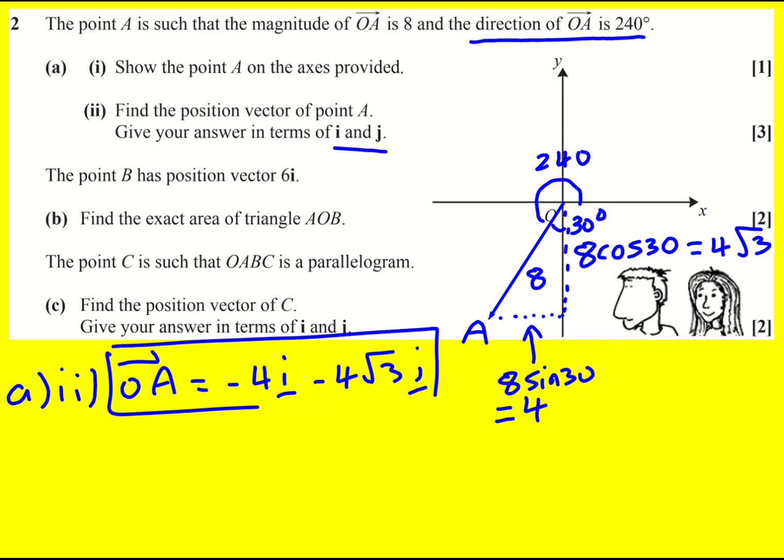It turns out you can do it more quickly - I just always get into this habit. You could have just done 8 sine 240 to get the i component straight away, and 8 cos 240 for the j component.